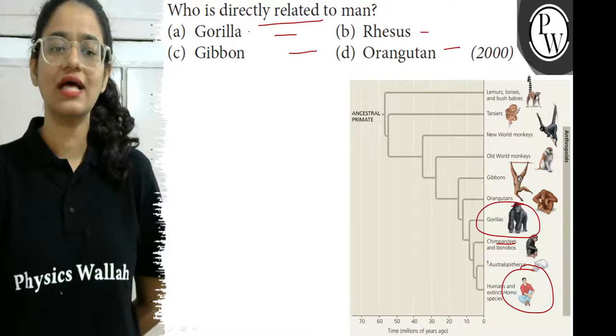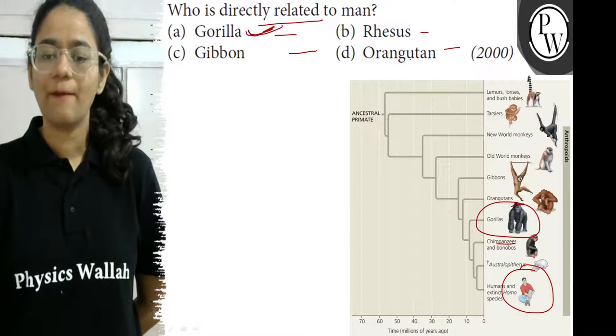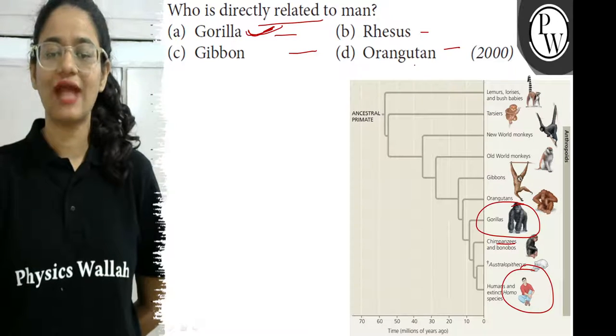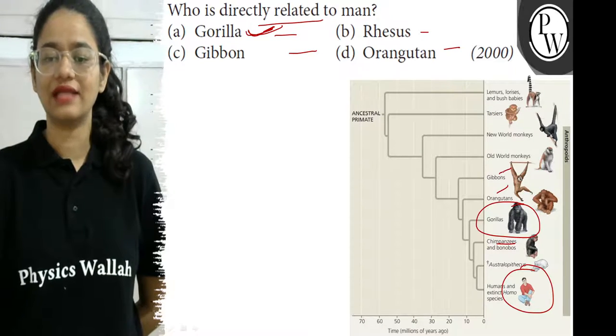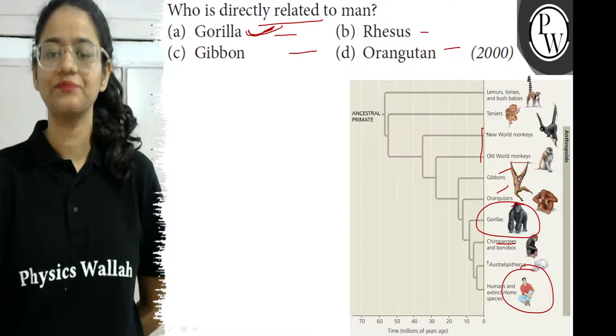So gorilla is directly related. If you can see, the rest—orangutan, gibbons—they come a little later. Rhesus monkeys also come somewhere here, a lot later.